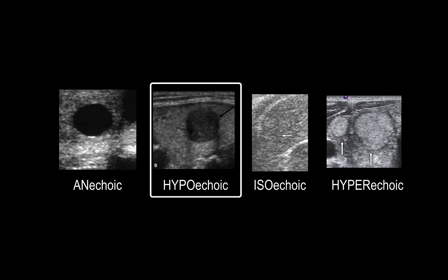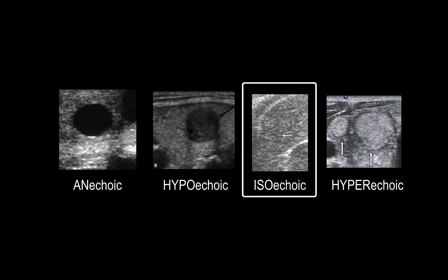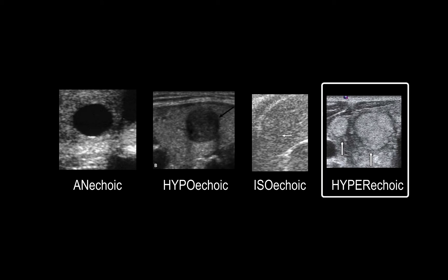The second image from the left is a hypoechoic structure in which there is some denser material within the fluid that leads to some artifact formation. The third is an isoechoic structure in which essentially all the tissue has more or less the same echogenicity. On the right side, the fourth image shows structures that block and reflect ultrasound waves much better than surrounding structures, as seen in these lesions.